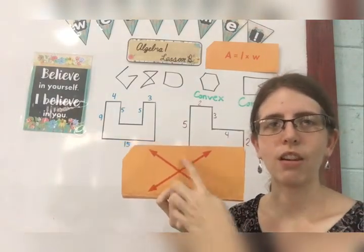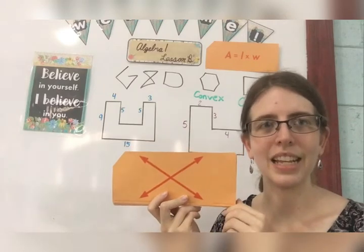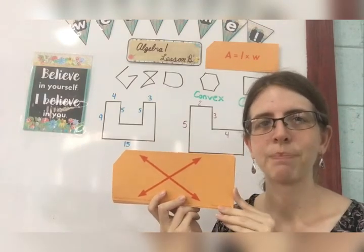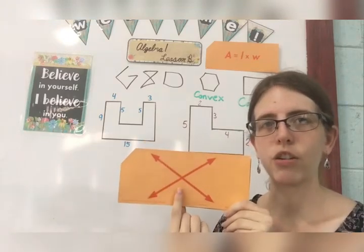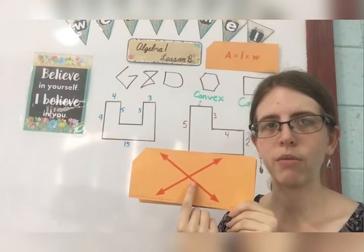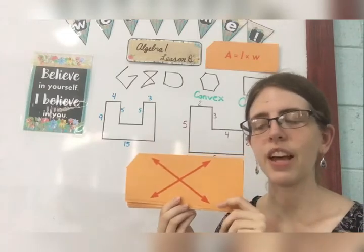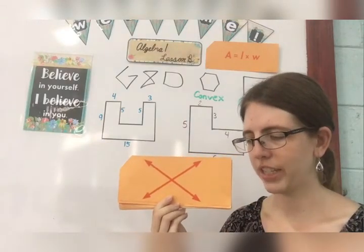So this right here is a set of intersecting lines. These lines cross over each other. And the point where they cross each other right here, we call that the point of intersection.